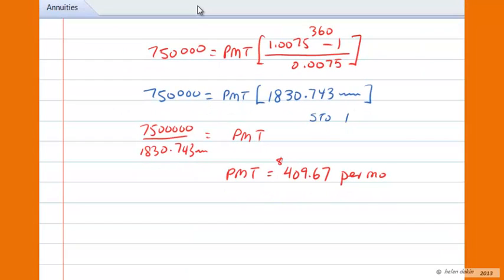Now the next part of the problem asks us to determine the total interest that is earned on these deposits. Let's see now, interest is always the difference between the money in and the money out. So the money out is $750,000. How much went in? So in order to determine the interest, let's figure out how much we put into the account. We have put in 360 deposits of $409.67.